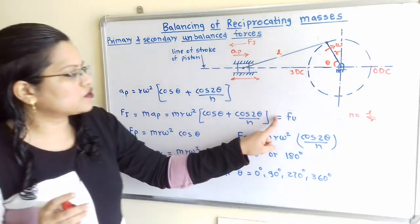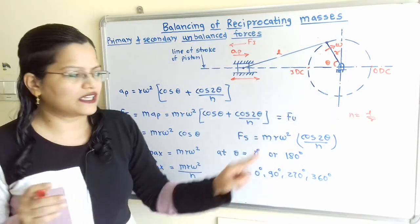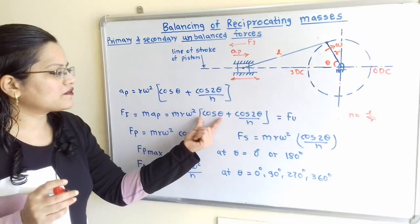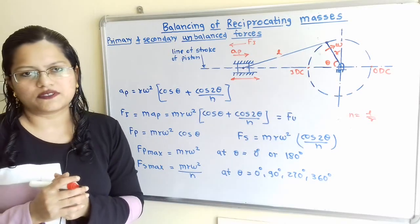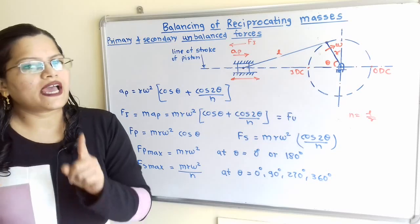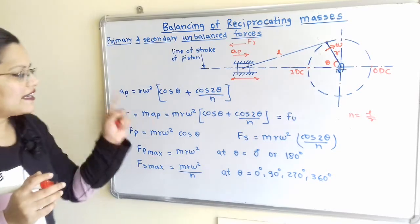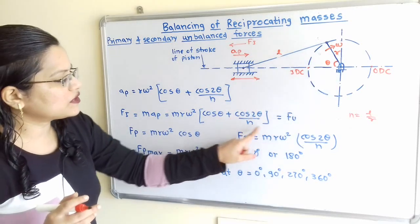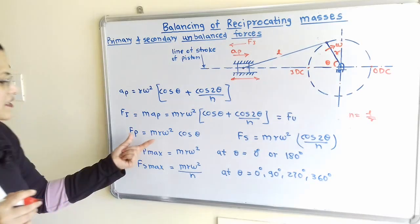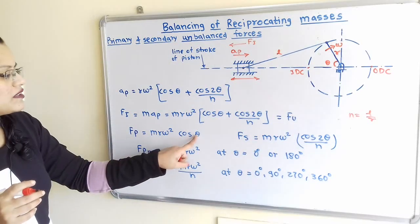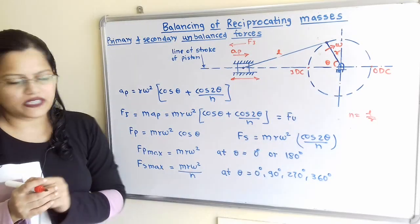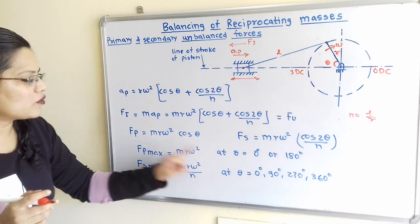This inertia force Fi is also known as the unbalanced force Fu. Multiplying M·R·ω² inside the bracket gives two terms. The first term, M·R·ω²·cos θ, is known as the primary force. The second term, M·R·ω²·cos 2θ / N, is known as the secondary force. The maximum primary force, when θ = 0° or 180°, equals M·R·ω².